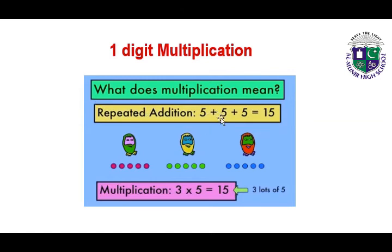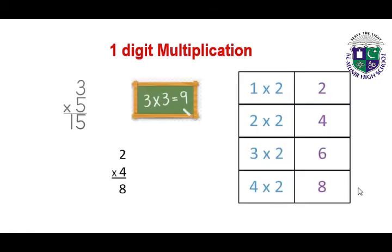What does multiplication mean? Repeated addition. Repeated addition means five plus five plus five plus five is equal to fifteen. Here we have red dots, five green and five blue dots. When we add them we get fifteen, and when we multiply three times five, three fives are fifteen.